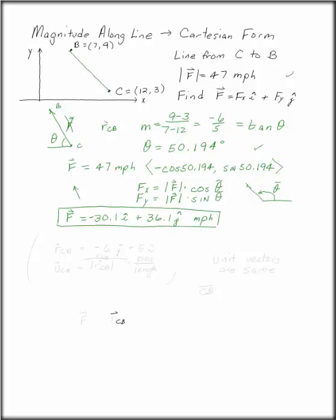Notice this is not the same thing as the position vector. If you wanted RCB, you would find the slope of the line and you would have minus 6j plus 5i. That's the position vector for RCB.